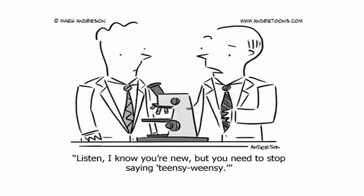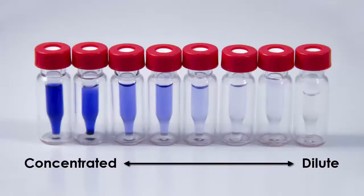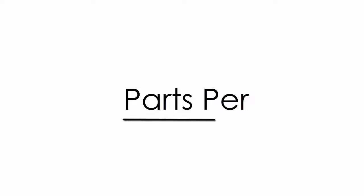If you're a scientist, it's not cool to refer to things as itsy-bitsy or teensy-weensy. We need to be more precise, so when describing dilute solutions where there is a very small amount of substance in a very large volume, scientists use a notation called parts per.